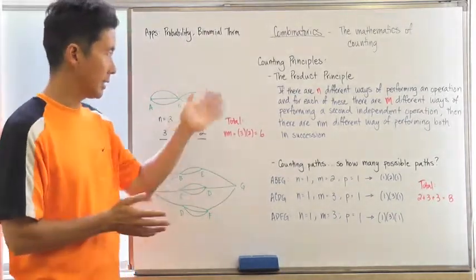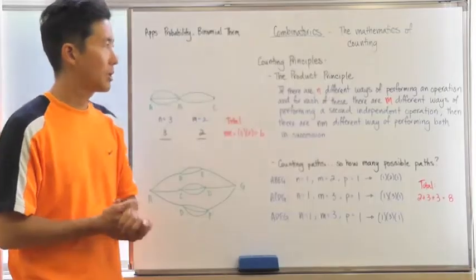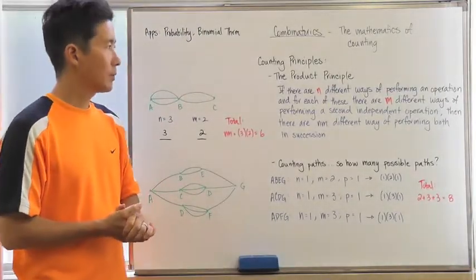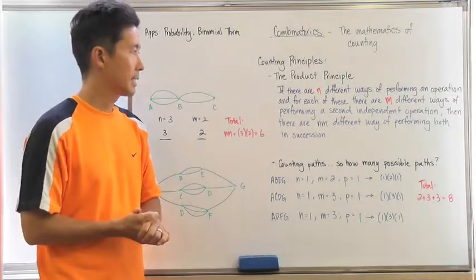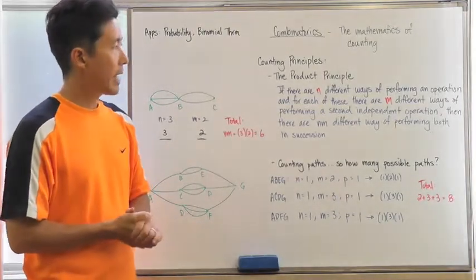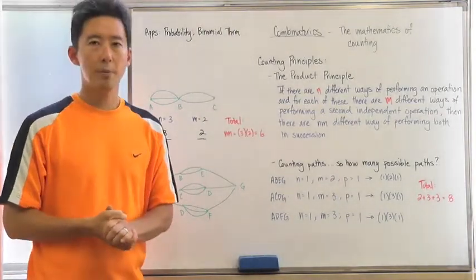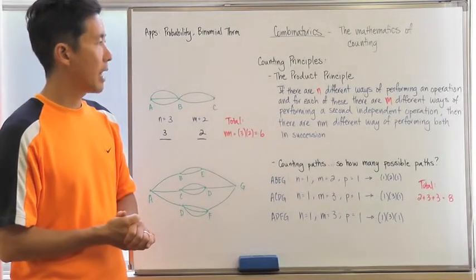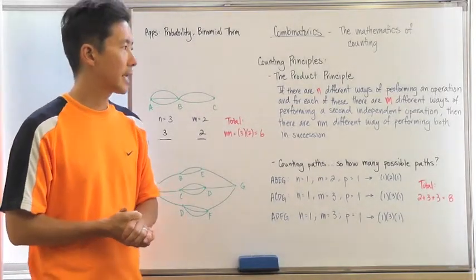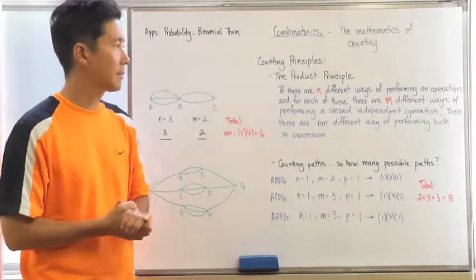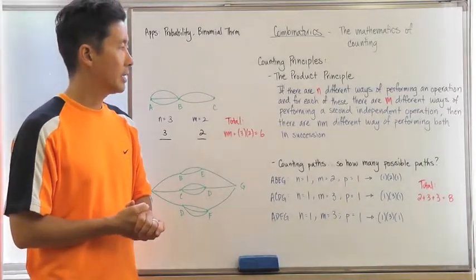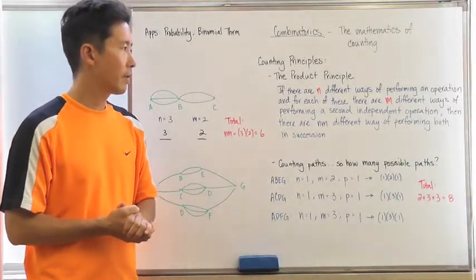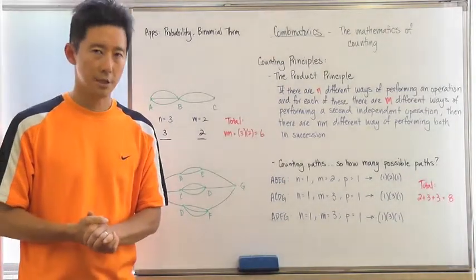Let's take a look at the first one: it's called the Product Principle. The Product Principle states that if there are n different ways of performing an operation, and for each of these there are m different ways of performing a second independent operation, then there are n times m different ways of performing both in succession.